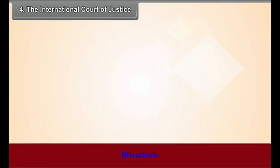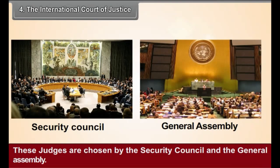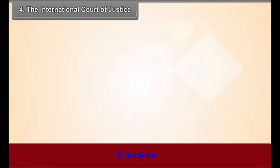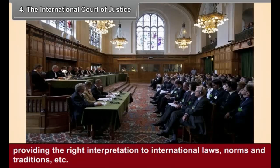International Court of Justice — Structure: There are a total number of 15 judges in the International Court. These judges are chosen by the Security Council and the General Assembly. Functions: The Court performs the functions of adjudicating disputes between two or more member countries, providing the right interpretation to international laws, norms, and traditions.